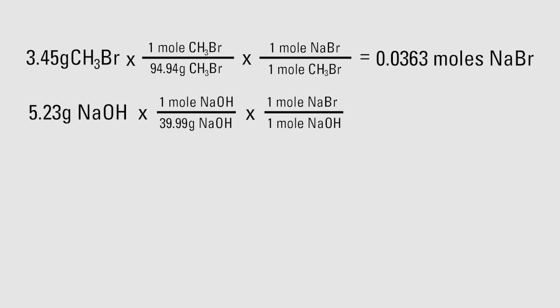It is very important to make sure that you use the proper reaction coefficients. This example is simple in that the ratio is 1 to 1. Nevertheless, this step is important. This calculation gives us 0.1308 moles of sodium bromide.